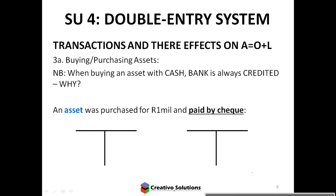Third scenario: buying assets with cash. The asset increases because you're buying more resources than you had before. Bank decreases because you're using money — paying by check. So the asset is debited and bank is credited.